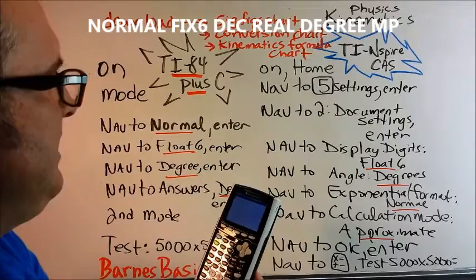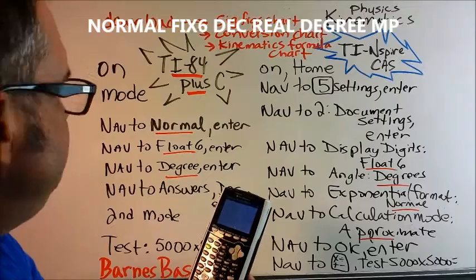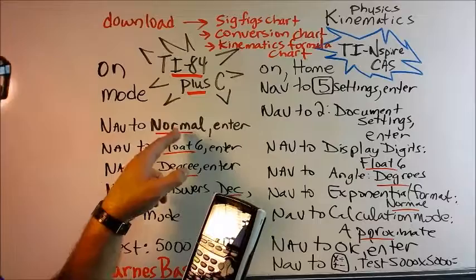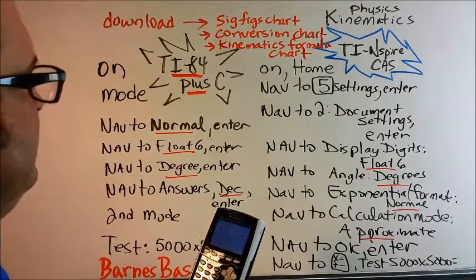At this point, I have across the top of my screen normal, float 6, degree, real, and MP. The normal will not put your information into scientific notation. The float 6 will give you six digits in the answer. And then we can kind of round those off according to our significant figures chart.